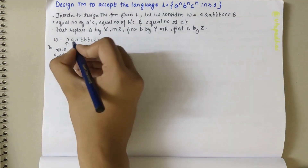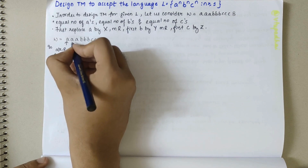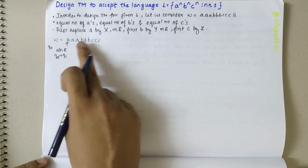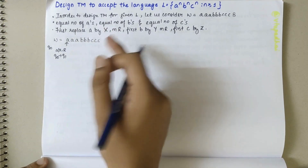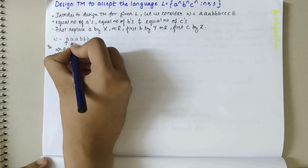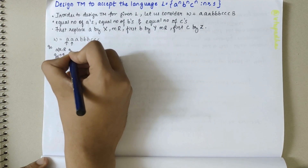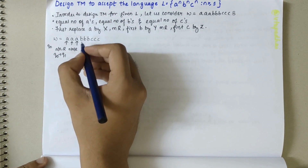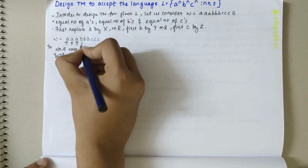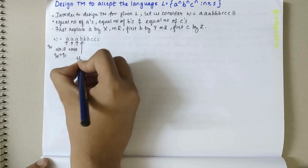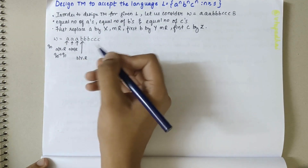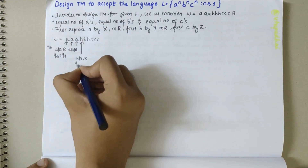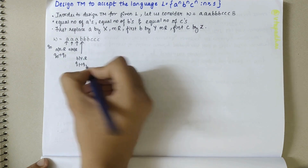Next, considering this A — since we have replaced the first A by X, we need to find its corresponding B and C, so we keep shifting. Here, replace A by A and move right. When we reach the first B, we replace B by Y and move right. Now we have changed the symbol from B to Y, so there is a transition from Q1 to Q2.